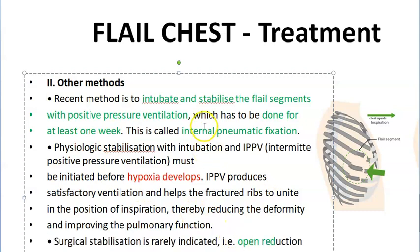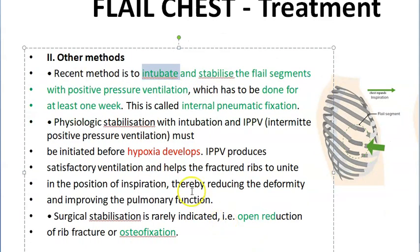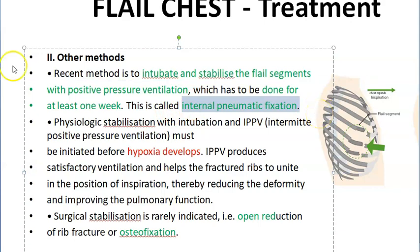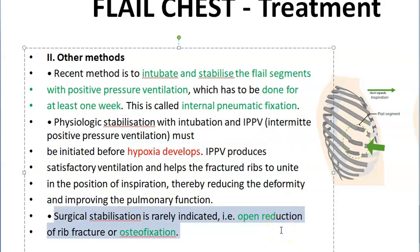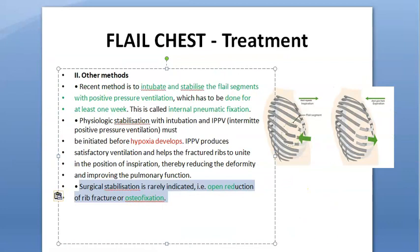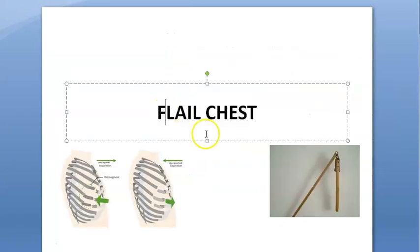The preferred approach is intubation and stabilization of flail segments with positive pressure ventilation — internal pneumatic fixation — which should be done before hypoxia develops. If that doesn't work, open reduction and osteofixation can be performed. That covers the complete management of flail chest.